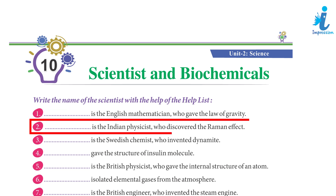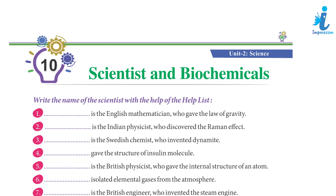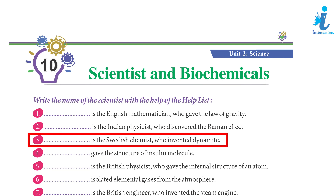2. C.V. Raman is the Indian physicist who discovered the Raman effect. 3. A. Nobel is the Swedish chemist who invented dynamite.